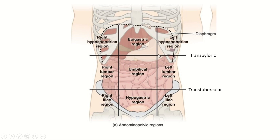In the upper right corner we have the right hypochondriac region. Since this lies below the cartilages of the ribs, it's called hypochondriac — both the right hypochondriac and the left hypochondriac. Between these we have the epigastric region. Coming below, we have the right lumbar region and the left lumbar region.